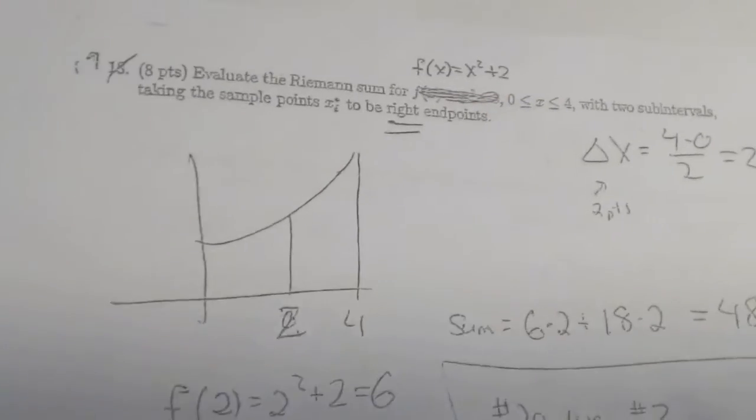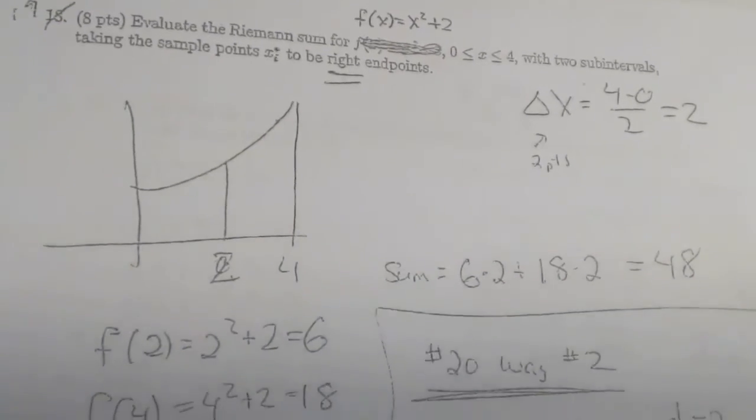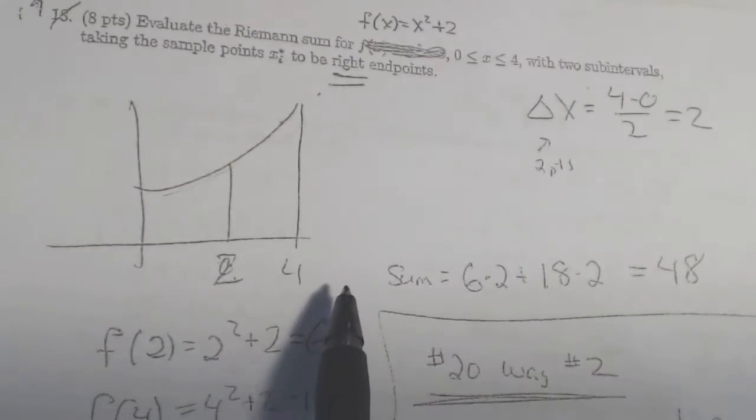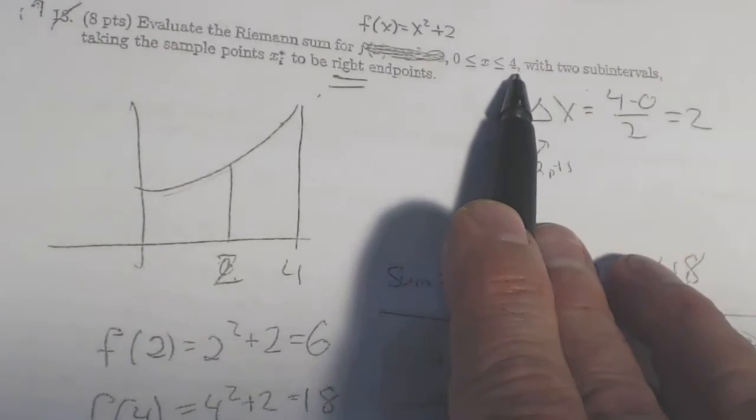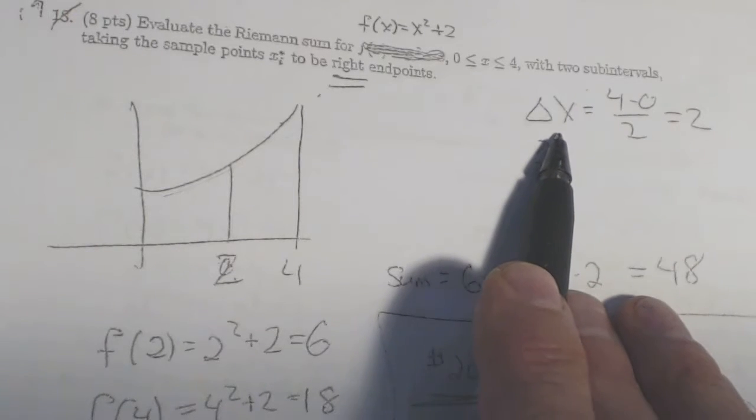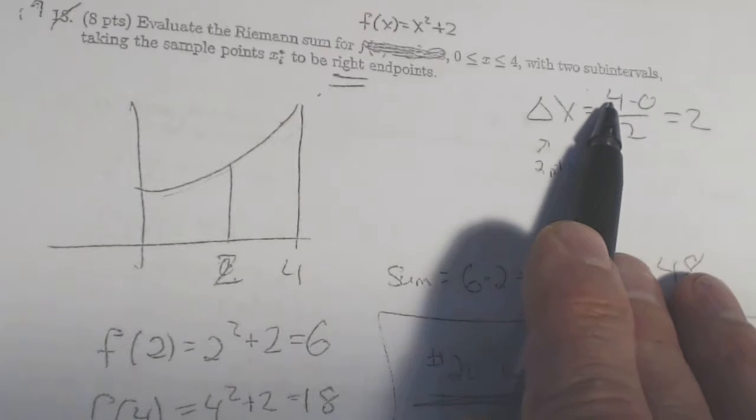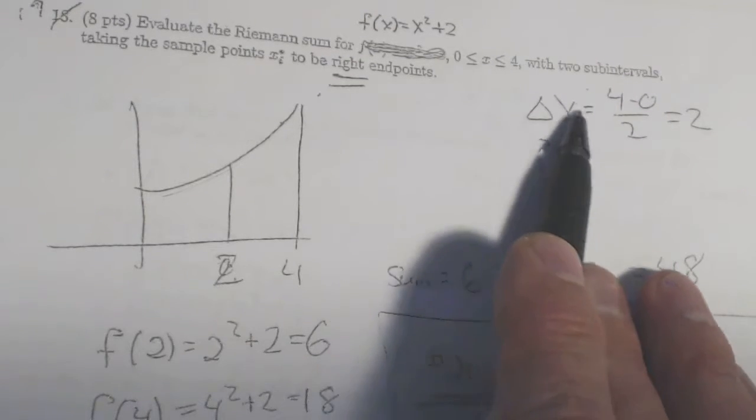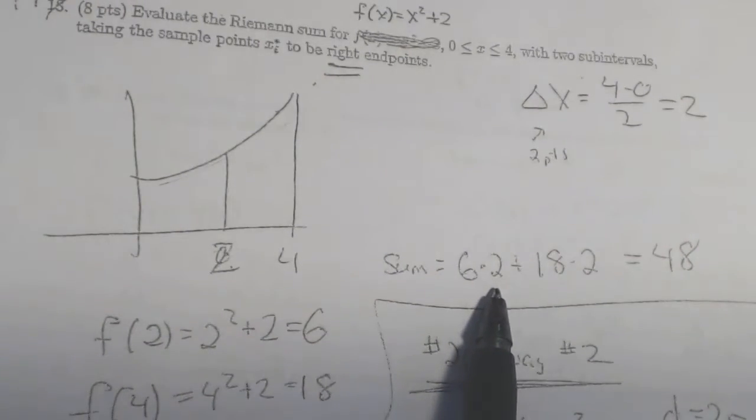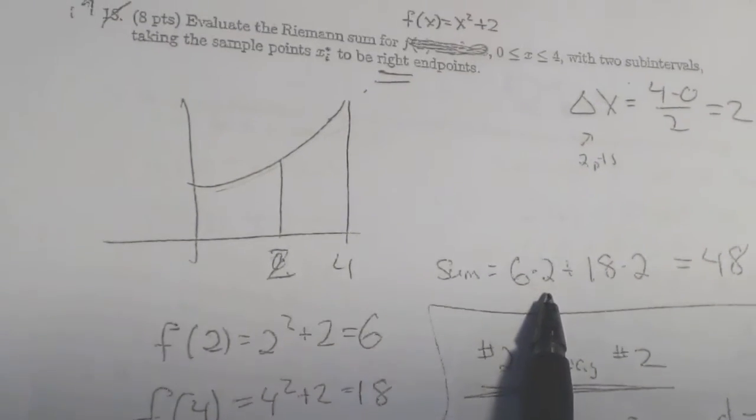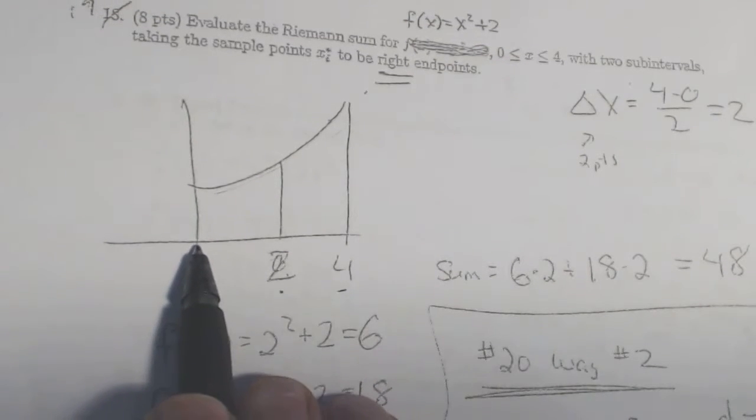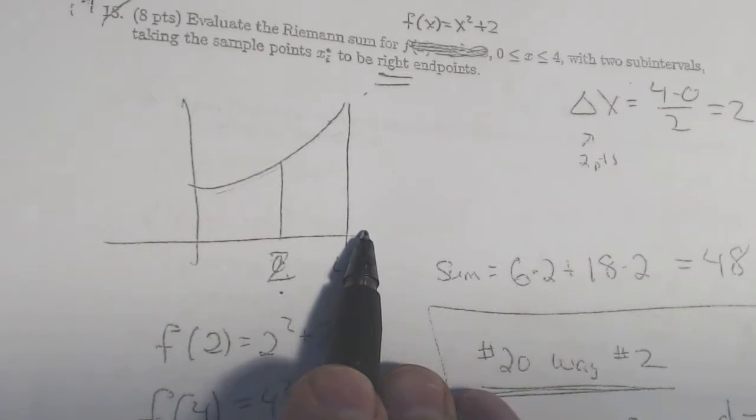We did pretty good on our Riemann sum. I was real happy there. Here's our function, x squared plus 2. We're supposed to be using an interval from 0 to 4 with just two subintervals, which means two rectangles. So our delta x, our width of each rectangle, would be 4 minus 0 from the intervals there, divided by 2 is 2. Okay? Now, we need to figure out what is my function value, 2 and 4, if we're too wide, then I'm going to go from 0 to 2, and 2 to 4 for my two rectangles.